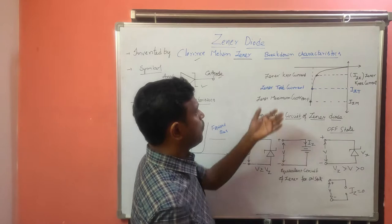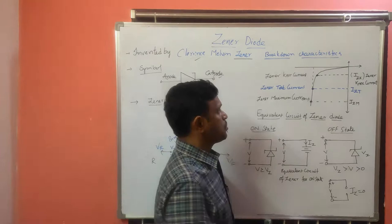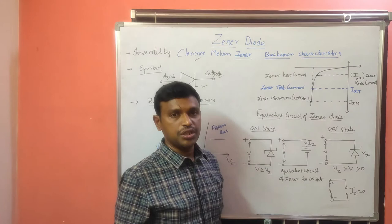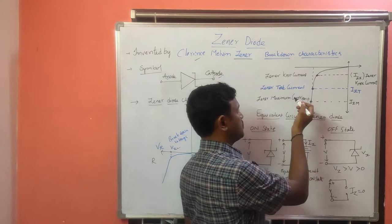I have divided the breakdown characteristics into three current regions. This is the reverse bias characteristics of the GINA diode. I have GINA knee current, GINA test current, and GINA maximum current.